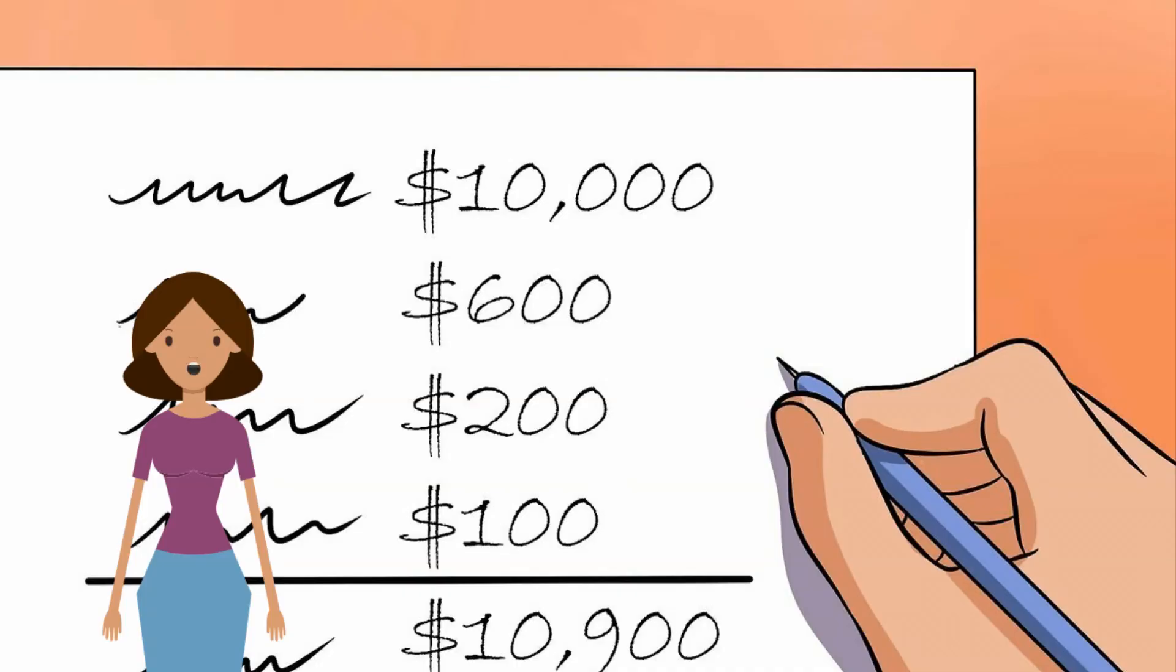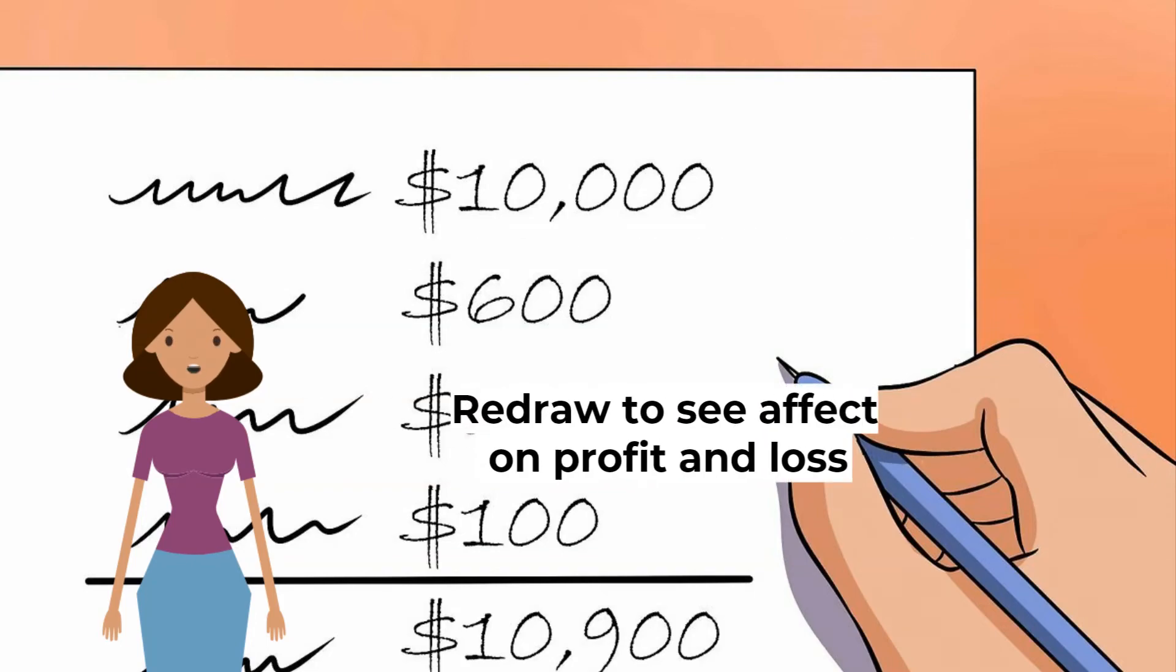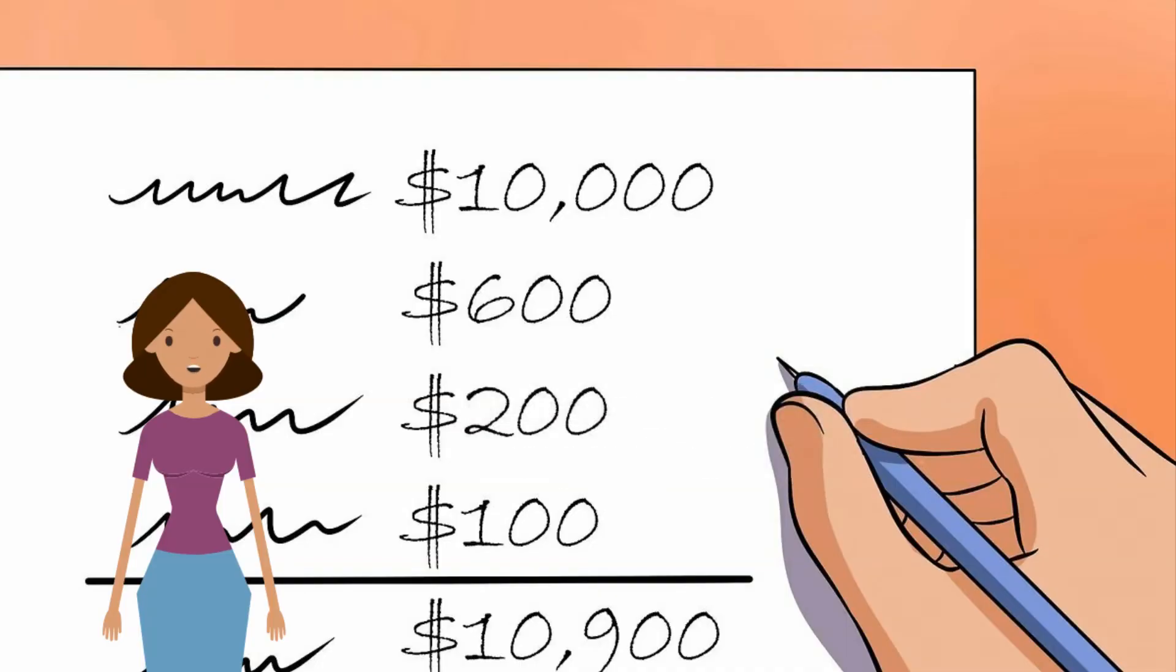What are the advantages of breakeven charts? Managers can look at the graph to find out the profit or loss at each level of output. Managers can change the costs and revenues and redraw the graph to see how that would affect profit and loss. For example, if the selling price is increased or variable cost is reduced.